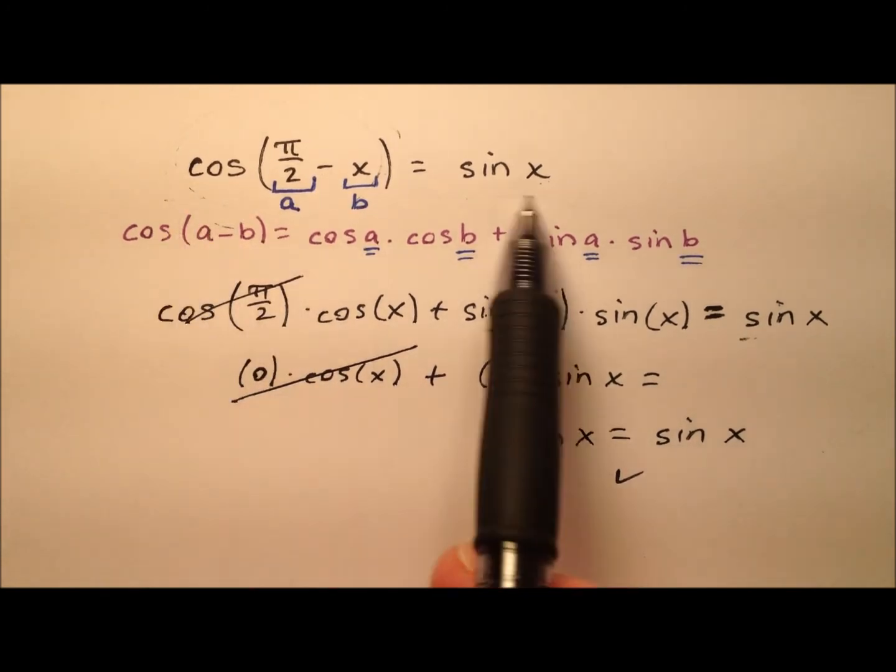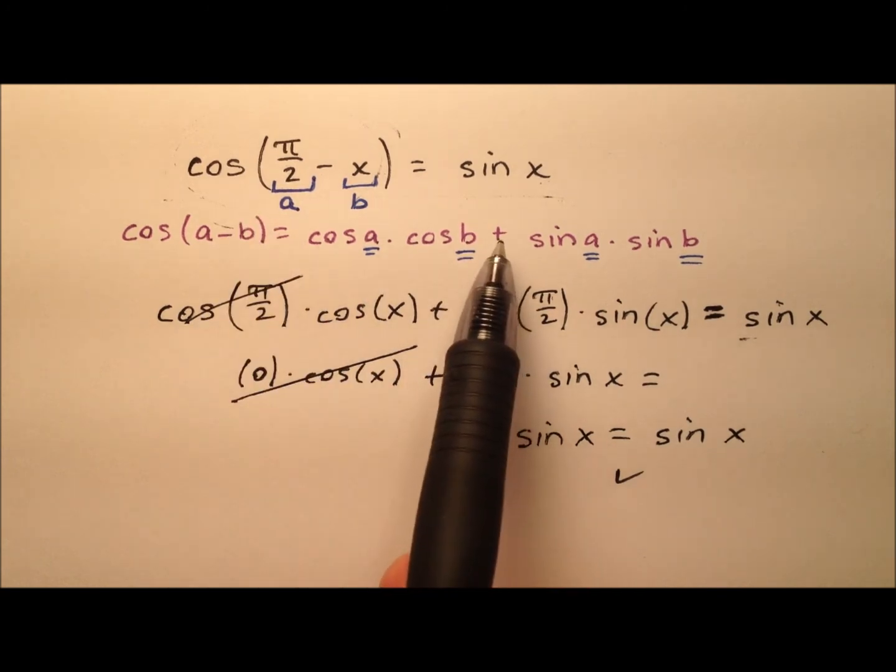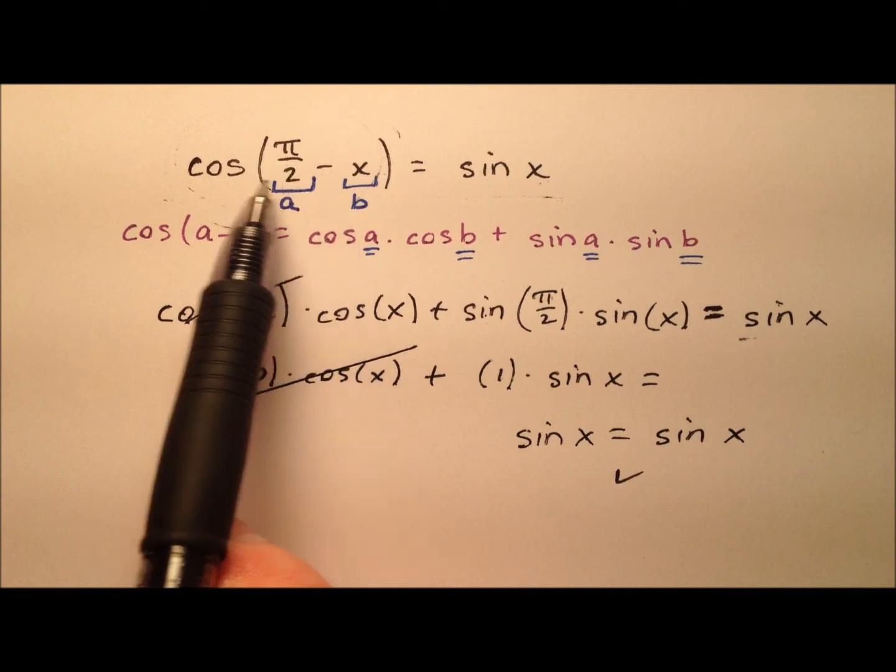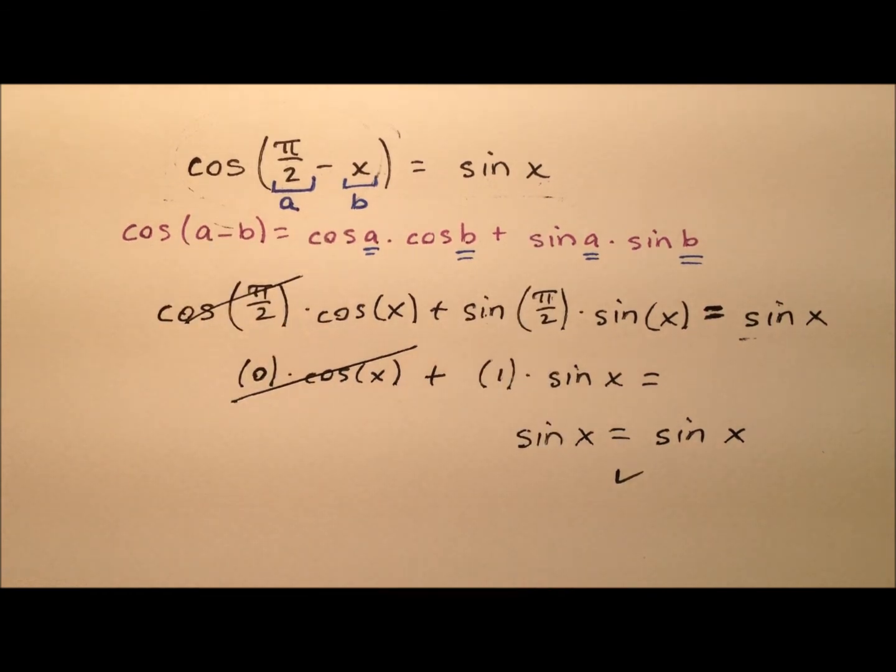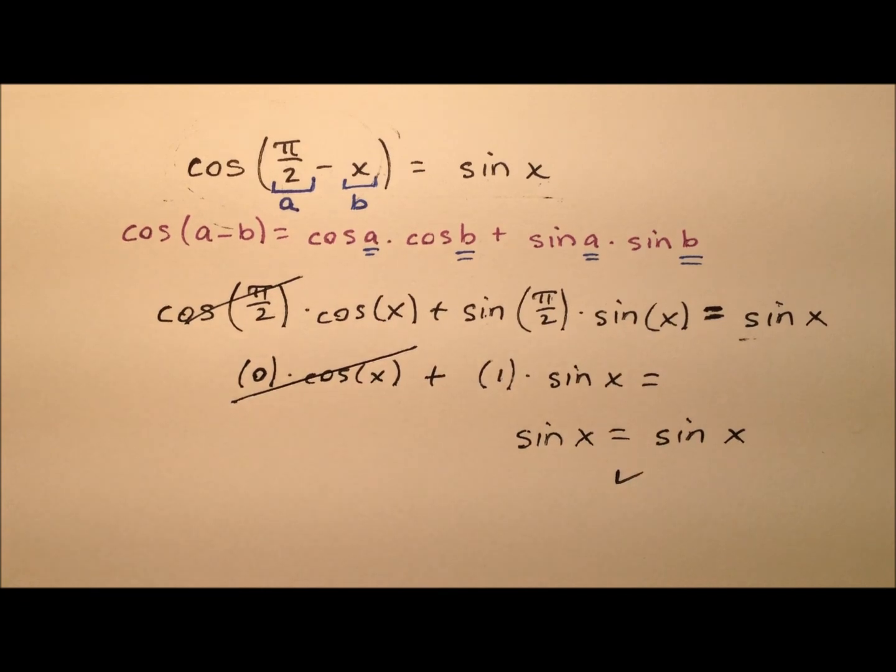And we have now proven this cofunction identity, which essentially stated that the sine of an angle and the cosine of its complement are going to be the same values. And we did that by employing the difference identity for cosine.